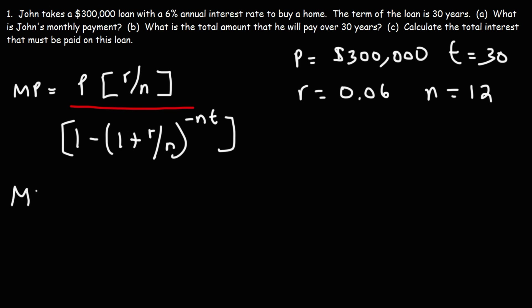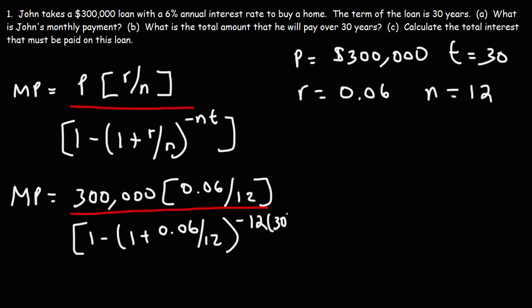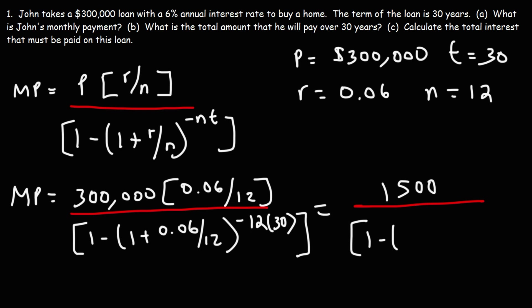Now all we have to do is plug this information into the formula. It's going to be 300,000 times r, which is 0.06, divided by 12. Then we have 1 minus 1 plus 0.06 divided by 12, raised to the negative NT. On top we get 1,500. On the bottom we have 1 minus 1.005, since 0.06 divided by 12 is 0.005, and 1 plus 0.005 is 1.005.